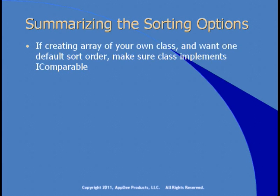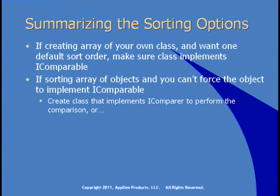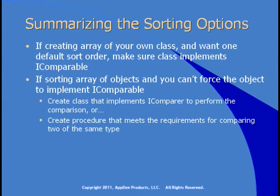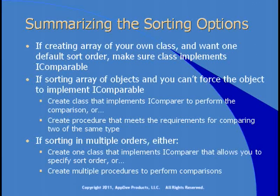You need to think about your sorting options. If you're creating an array of your own class with one default sort order, make sure your class implements IComparable — this lets you call Array.Sort and it'll sort. If you're sorting objects you can't force to implement IComparable, create a class implementing IComparer or a procedure meeting the comparison requirements. If you need to sort in multiple orders, either create one IComparer class that allows specifying the sort order, or create multiple procedures for those comparisons. Think about your goal and how much control you have over the classes you're trying to sort.